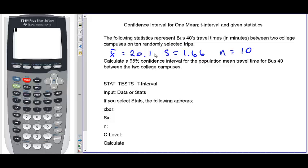The following statistics represent bus 40's travel times in minutes between two college campuses on 10 randomly selected trips. X bar the sample mean is 20.1, S the sample standard deviation is 1.66, and the sample size is 10. Calculate a 95% confidence interval for the population mean travel time for bus 40 between the two college campuses.